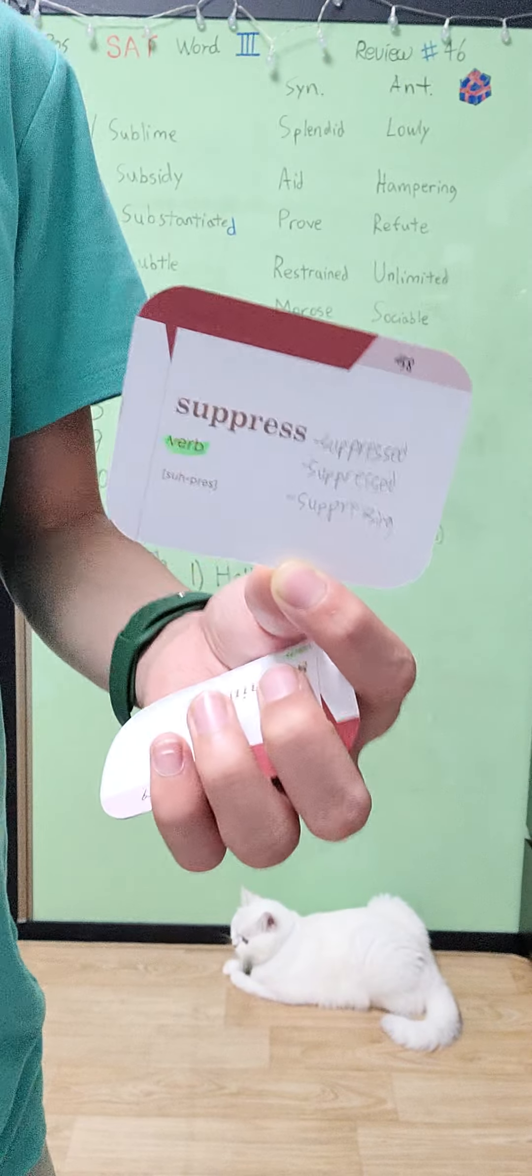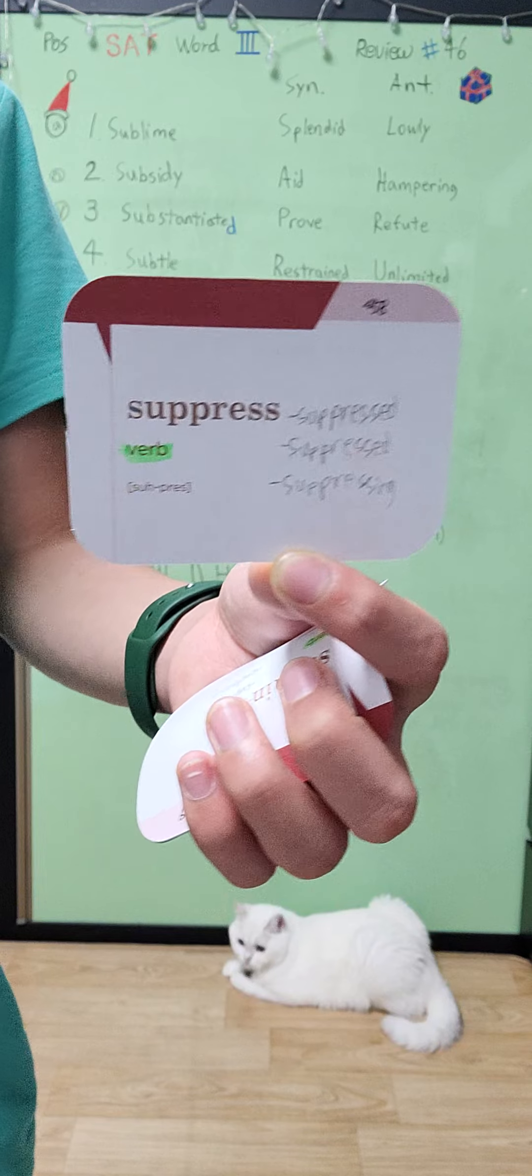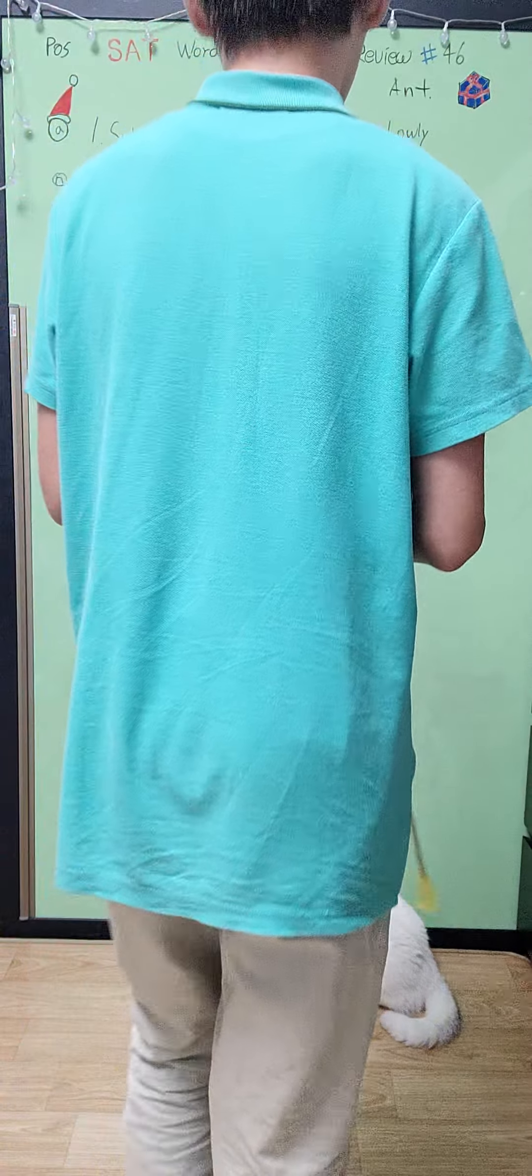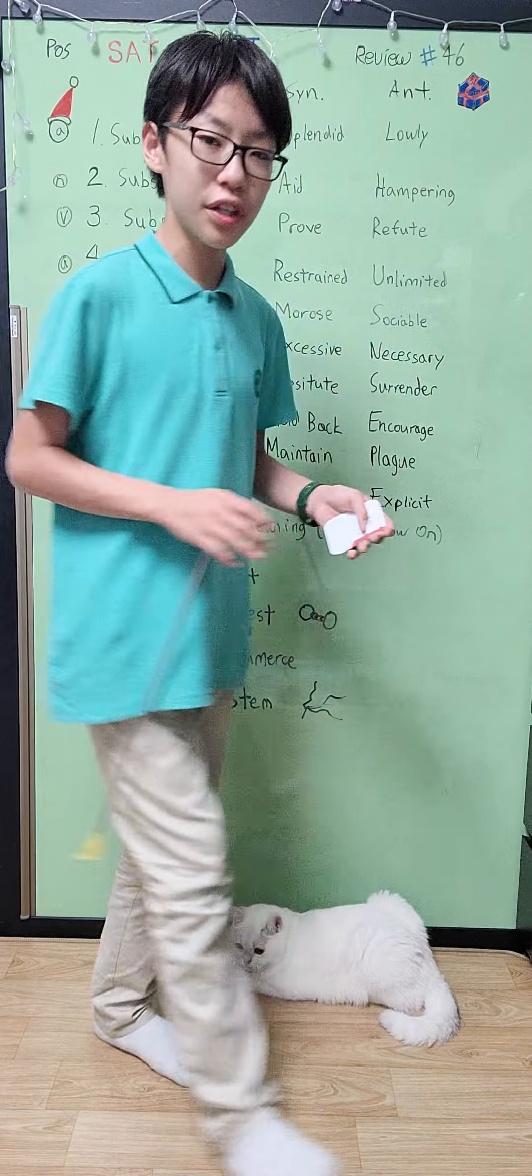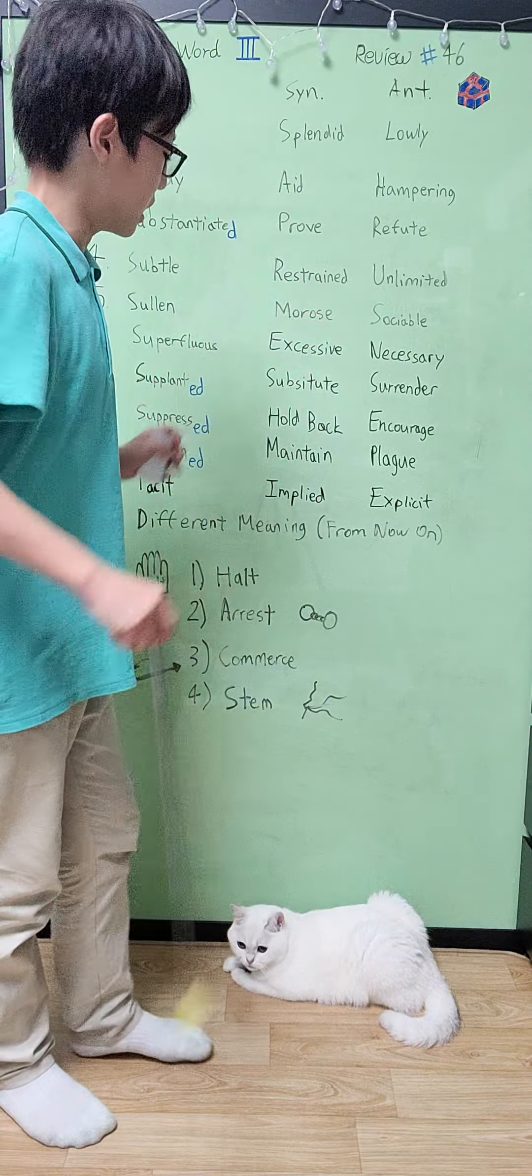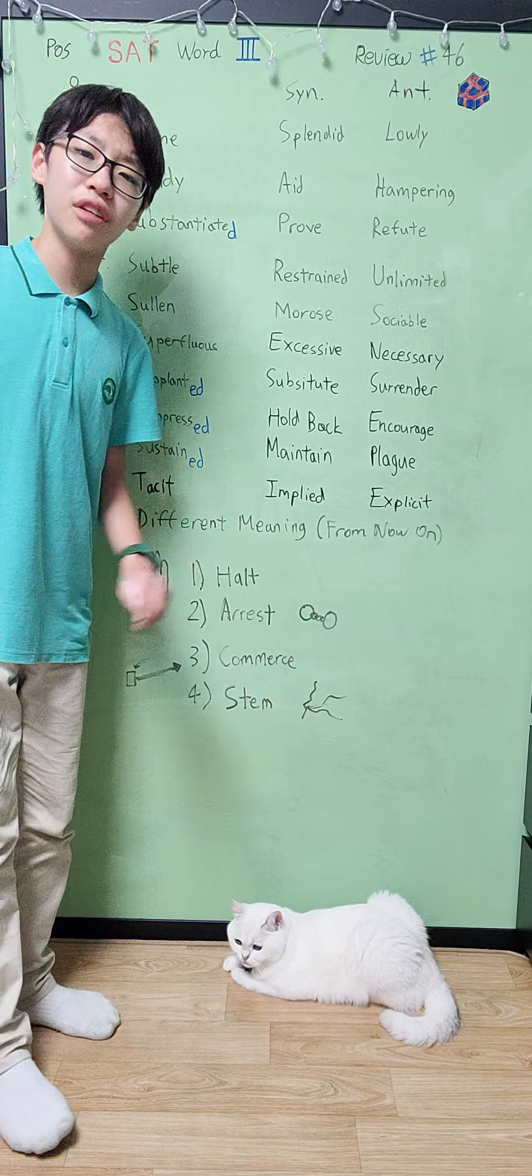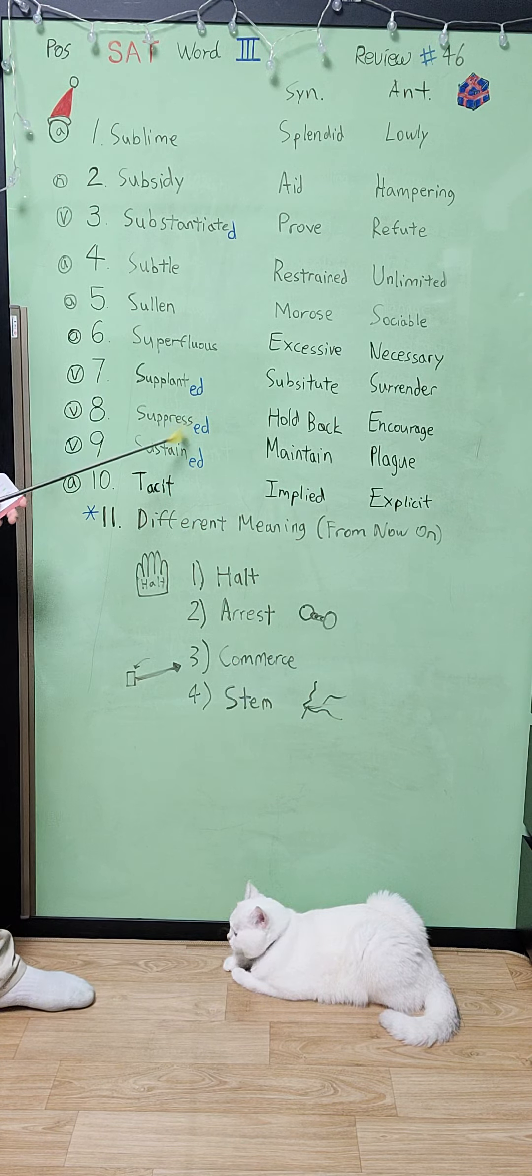Our next word is suppress. Suppress is a verb and it means to keep in or repress something, to hold back something or to try to keep something in. So like, to encourage would be the antonym and to discourage would be the synonym to suppress.